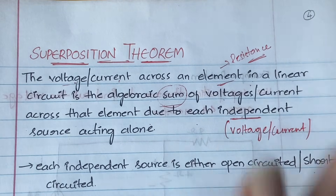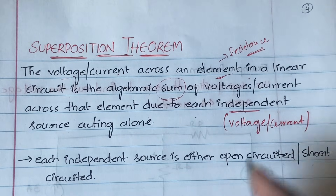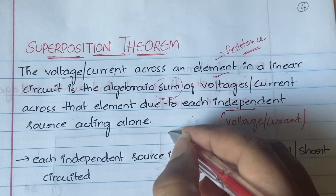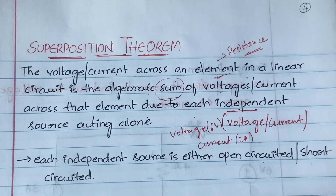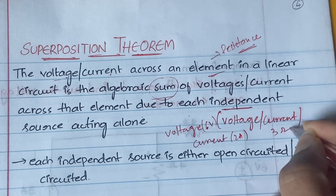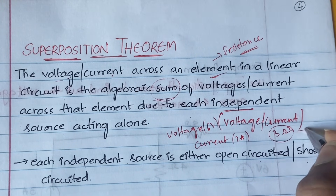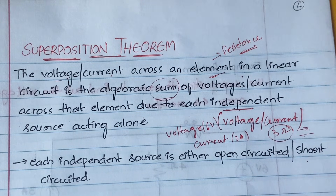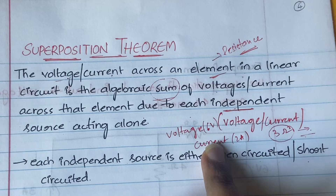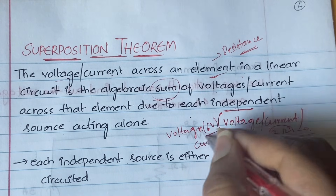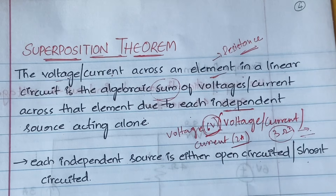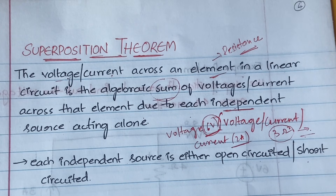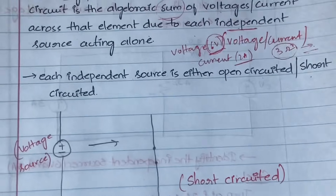I will explain the example and then you will understand the definition better. Suppose you have two independent sources — one is a voltage source of six volts and the other is a current source of two amperes — and we have a resistor of three ohms. Whatever voltage or current is on this resistor will equal the algebraic sum of the voltages when each source acts alone. When six volts acts alone, how much? When two amperes acts alone, how much? Add both and you get the voltage or current across the three ohm resistor.